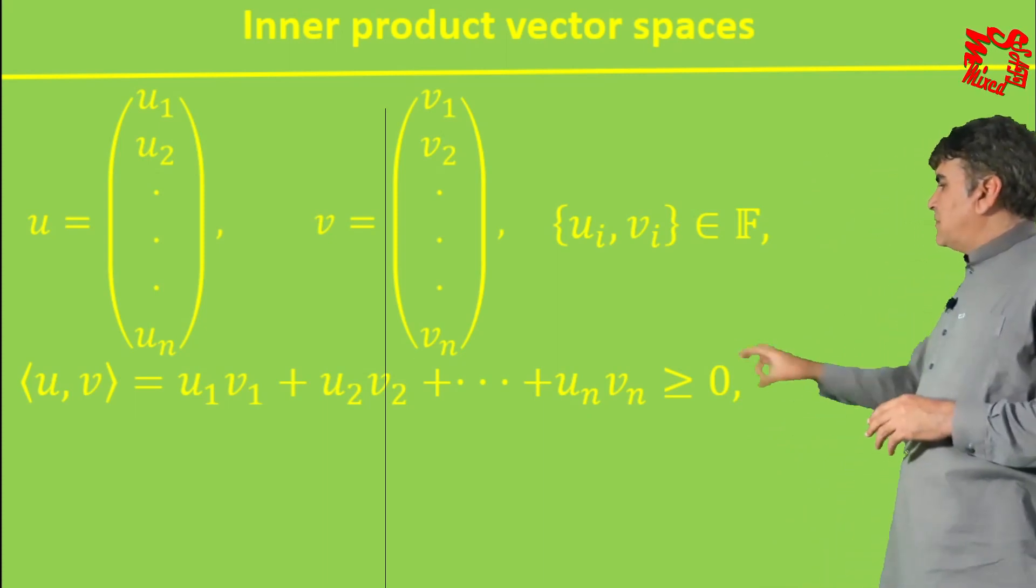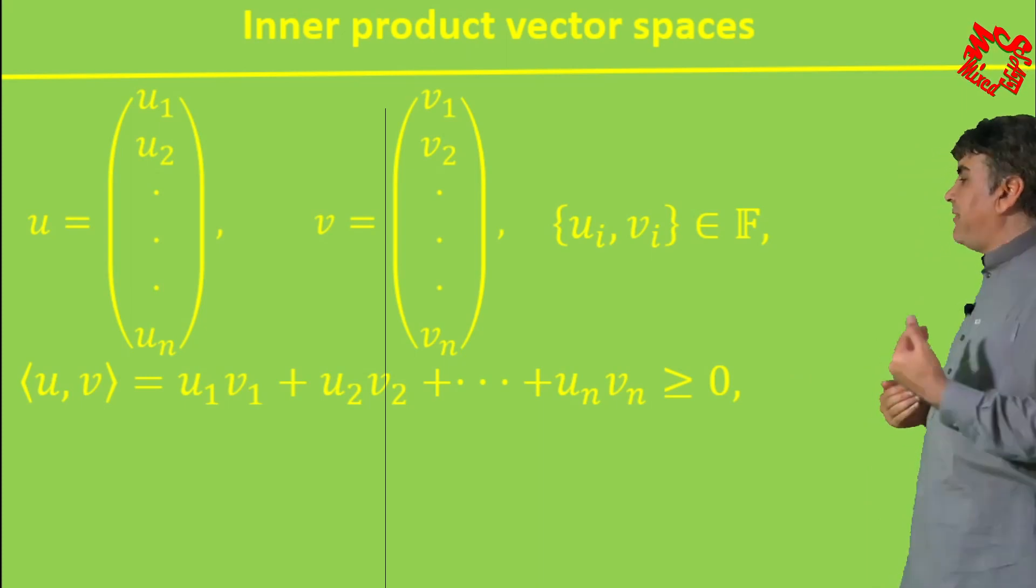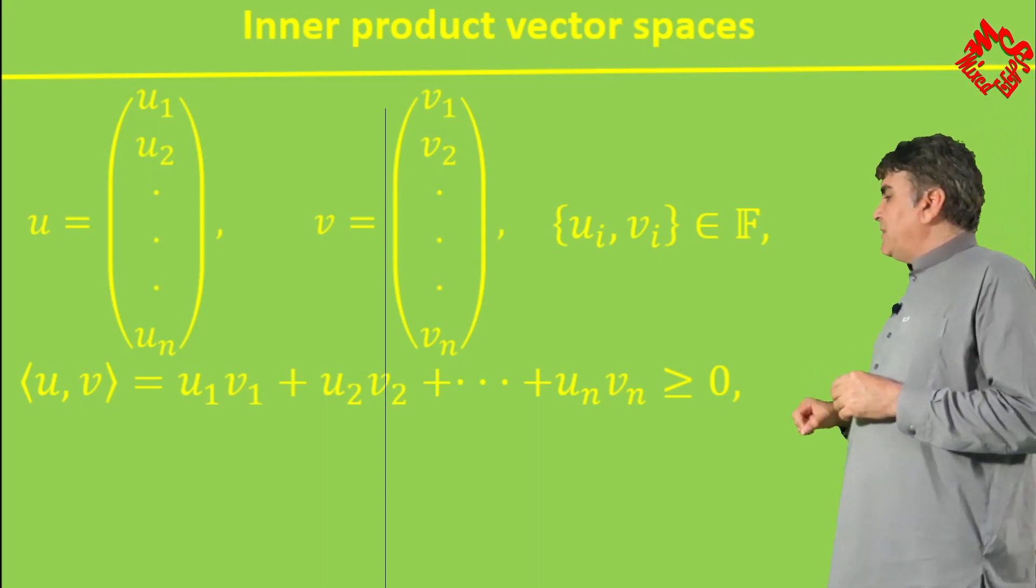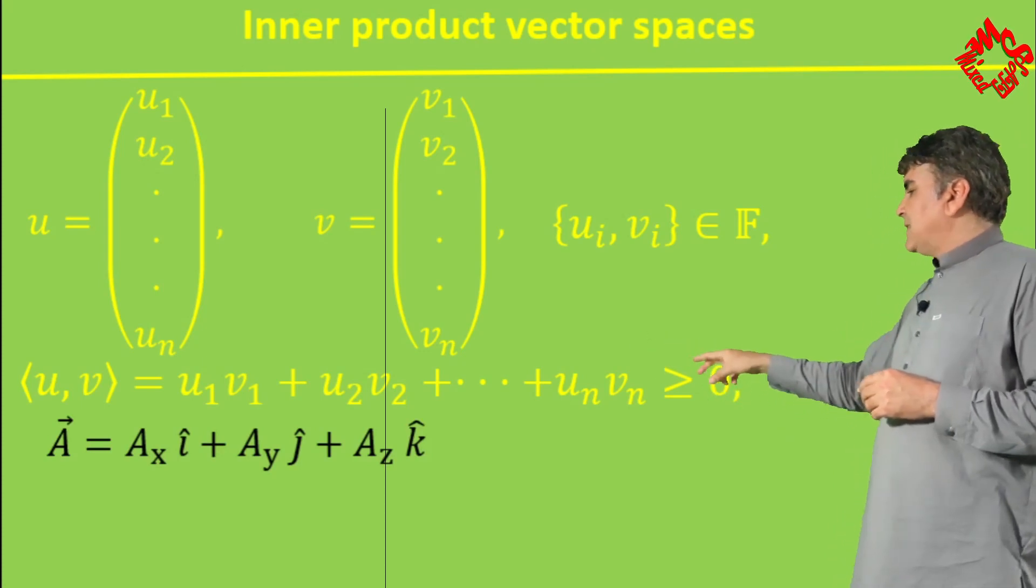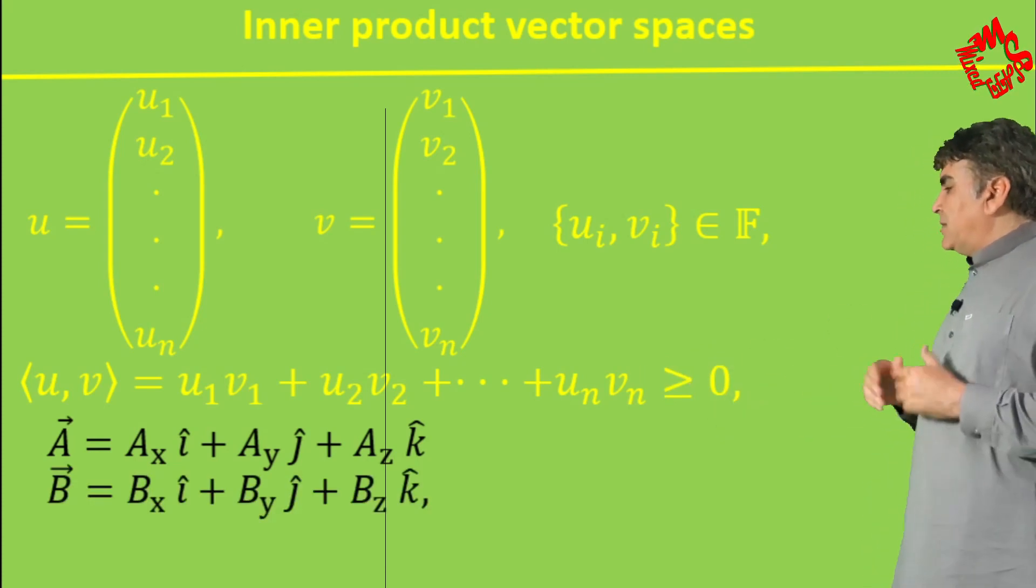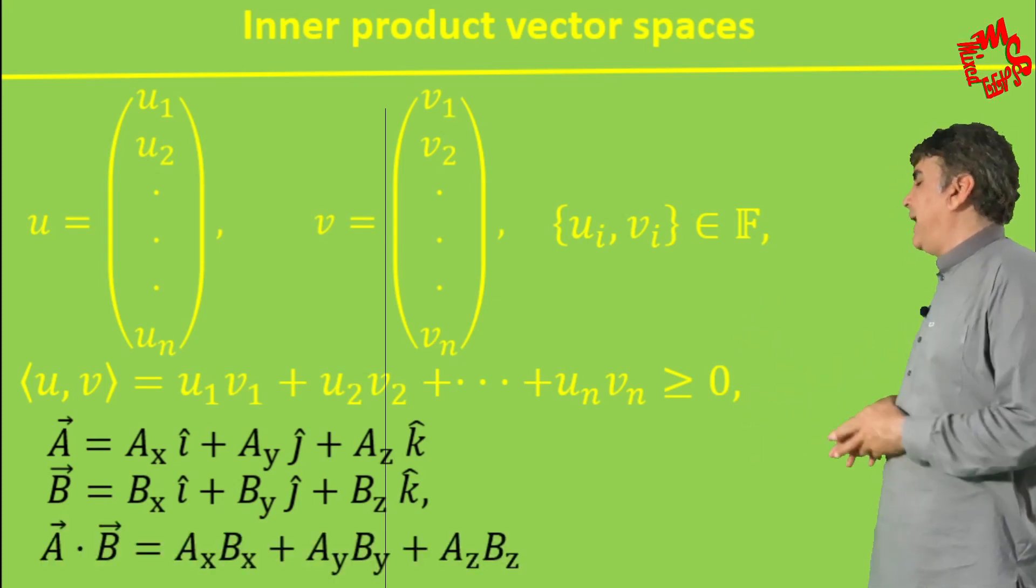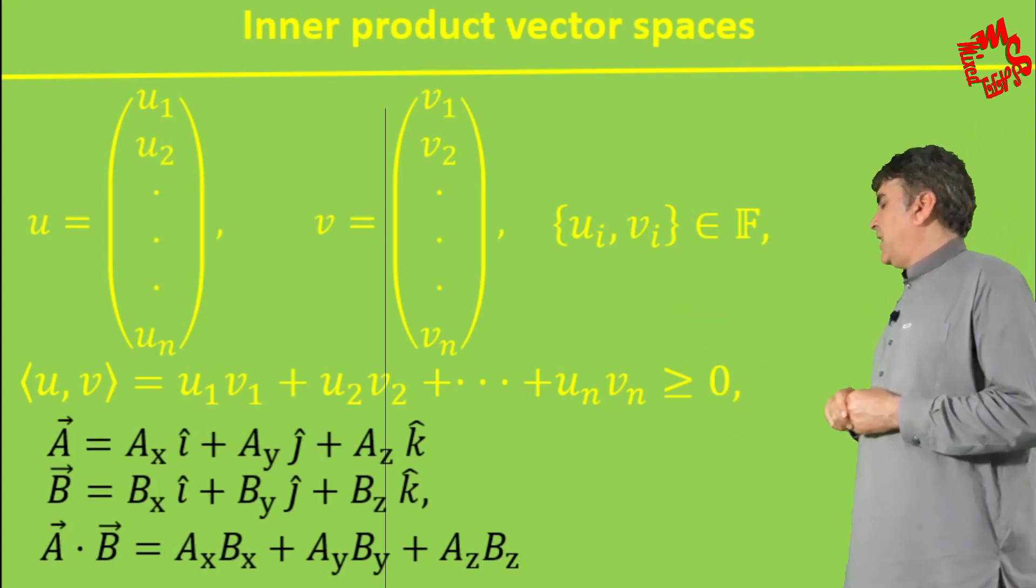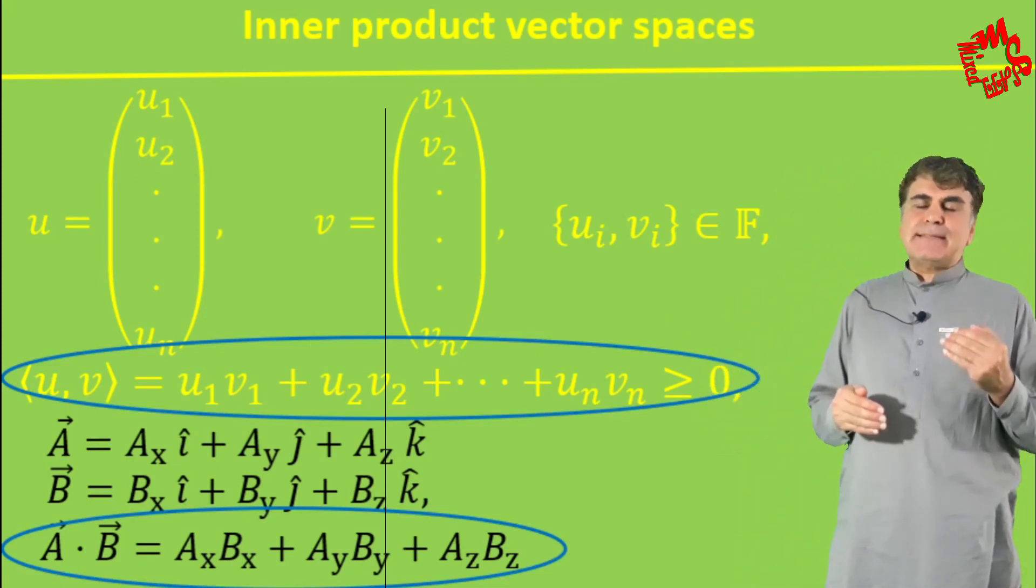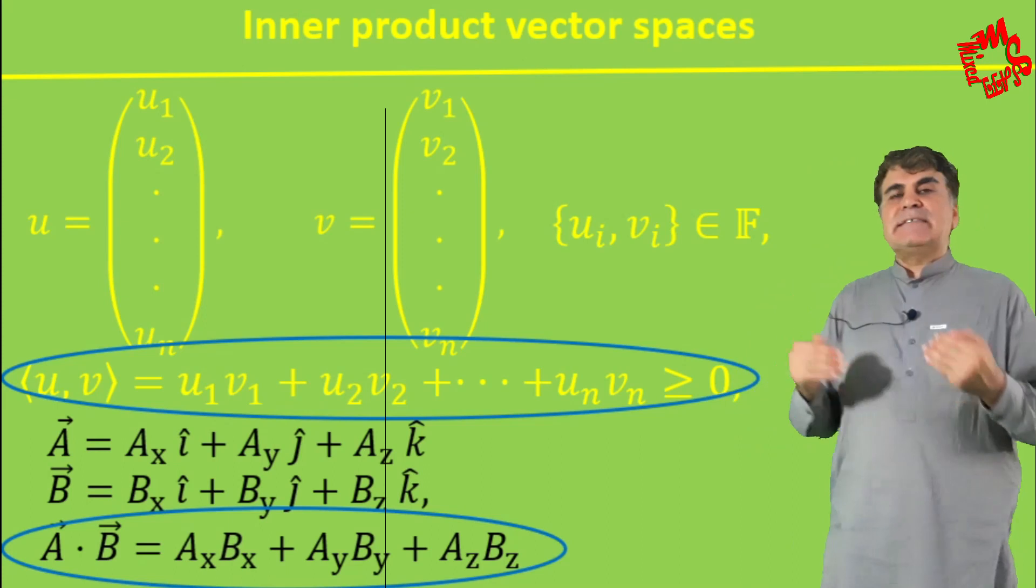If you carefully observe the right side of this equation, it is similar to what we call the dot product in the vector space of lines and arrowheads. For example, consider a three-dimensional vector A in the form of Ax i + Ay j + Az k and similarly the second vector B. The dot product of these vectors is obtained as the sum of the product of the corresponding elements, which is similar to that equation. So the inner product over the field of real numbers is in fact a generalization of the dot product of the space of lines and arrowheads.